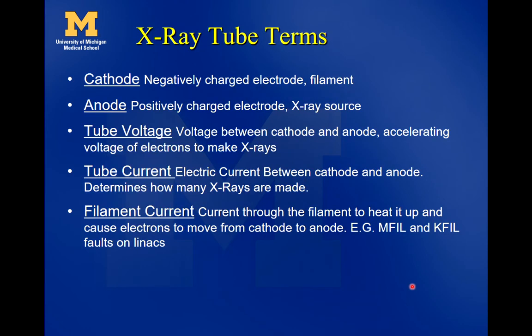Some terminology to memorize: the cathode is a negatively charged electrode — it's the filament, mostly made out of tungsten, with current going through it to make it very hot. The anode is the positively charged electrode where the electrons stop and where the x-ray source is created. The tube voltage is the voltage between the cathode and the anode — it's the accelerating voltage of the electrons to make x-rays, and it's the parameter we can tune by selecting the desired tube voltage.